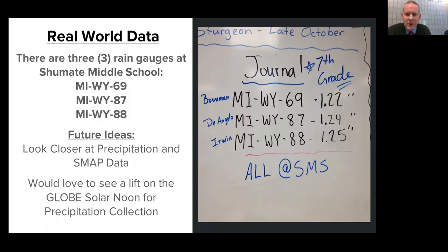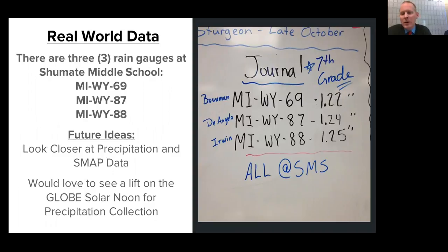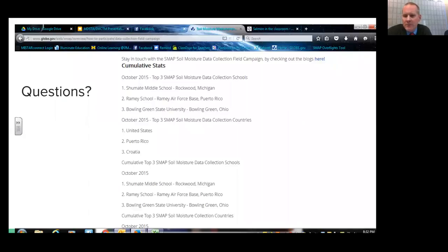Jeff concluded that GLOBE and SMAP has been a really big thing — his seventh graders loved it, hit the ground running, and his sixth graders saw what they were doing and wanted to participate too. He hadn't envisioned the project 'blowing up into really, really cool science.' He also noted fish-raising — salmon and lake sturgeon — in his classroom alongside SMAP and GLOBE work.